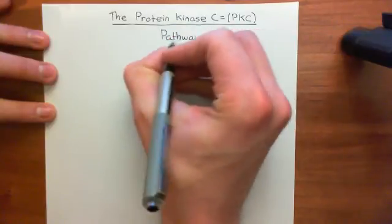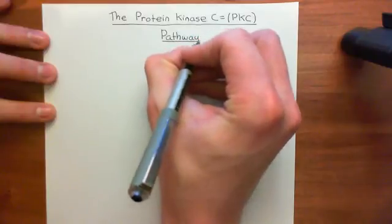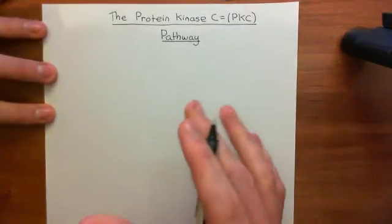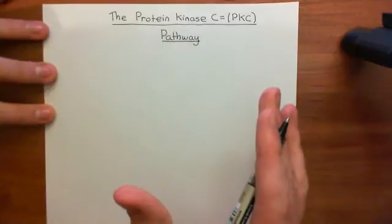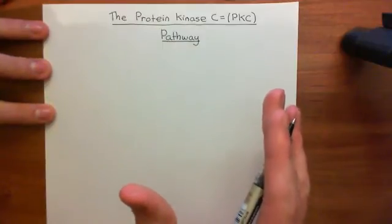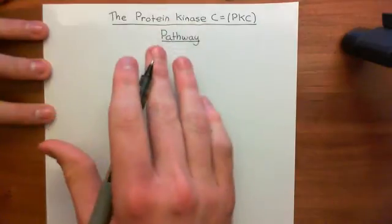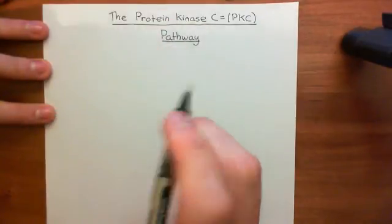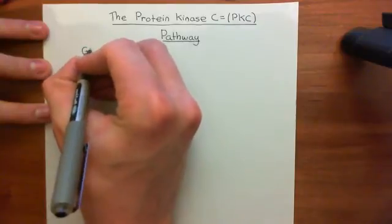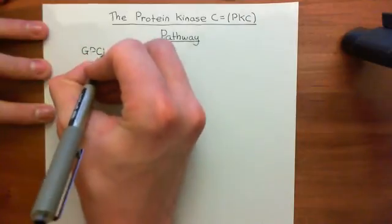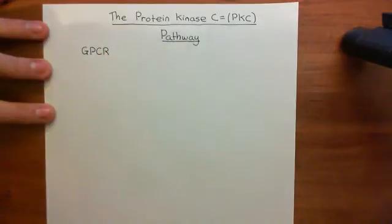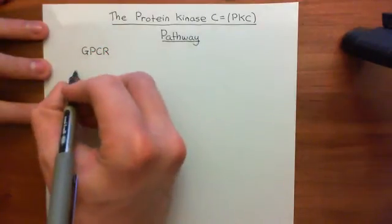This pathway begins with a G-protein coupled receptor. I'm not going to give you a specific G-protein coupled receptor because there are many, many examples of G-protein coupled receptors which can activate the protein kinase C pathway. So we're going to start off with a general G-protein coupled receptor. G-protein coupled receptors are usually abbreviated to GPCRs.